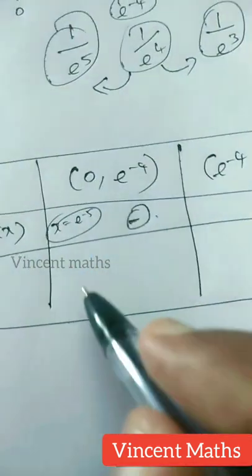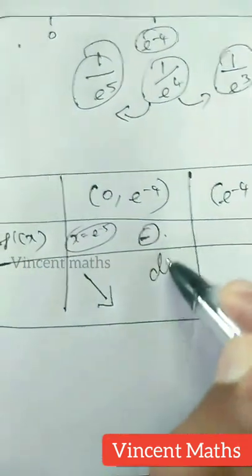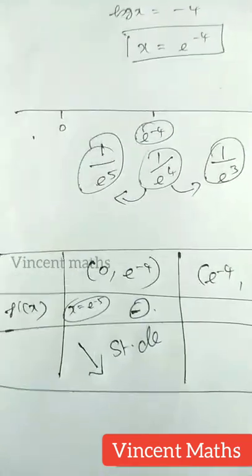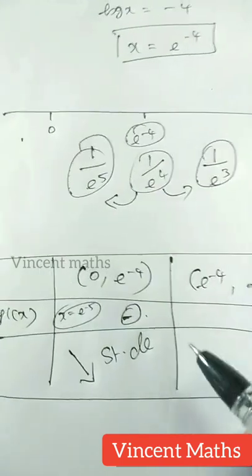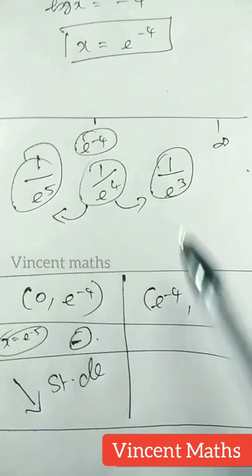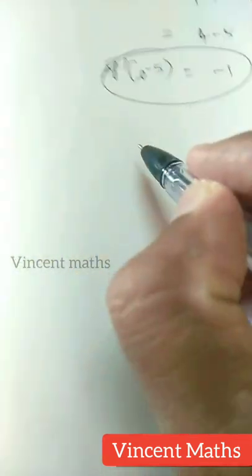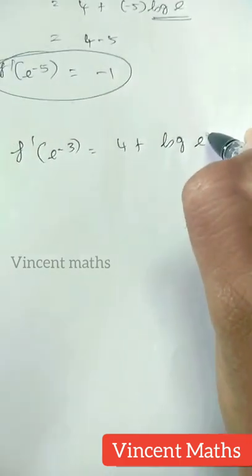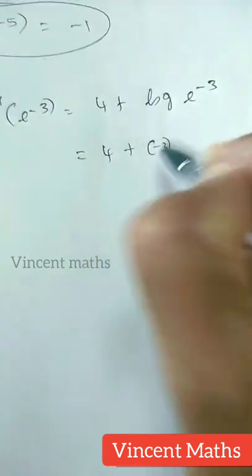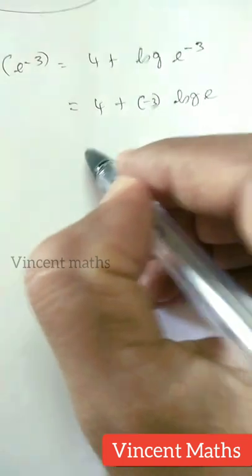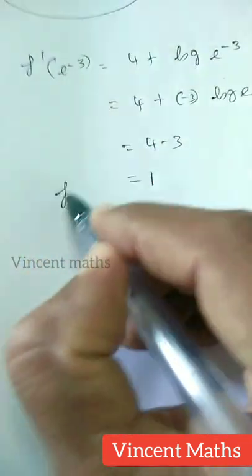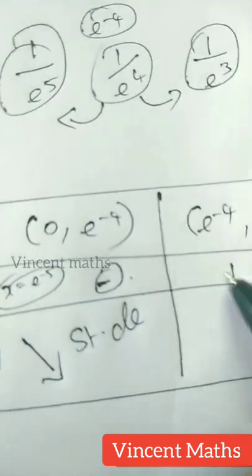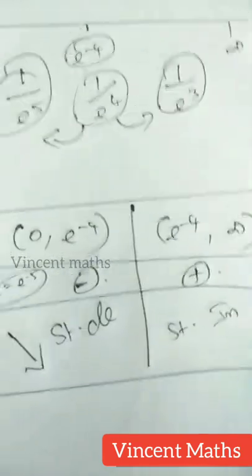If we take f dash of e power minus 5, we substitute: 4 plus log of e power minus 5. Using the log power rule, this becomes 4 plus minus 5 times log e. Since log e equals 1, this is 4 minus 5, which equals minus 1. So f dash of e power minus 5 is negative — the function is strictly decreasing in this interval. Then for the second interval, we substitute e power minus 3: 4 plus log e power minus 3 equals 4 minus 3 equals 1, which is positive. So the function is strictly increasing in that interval.